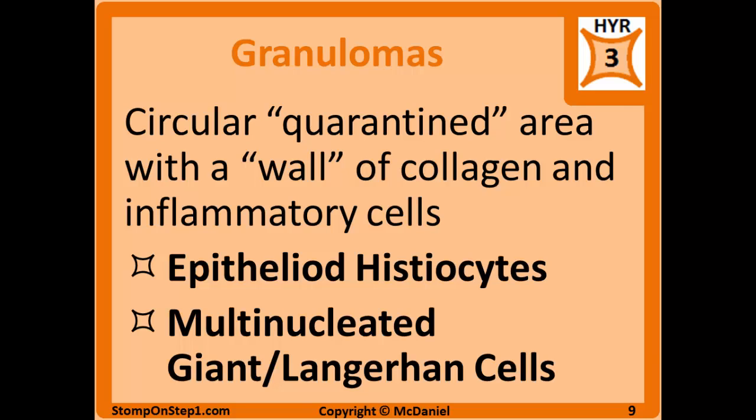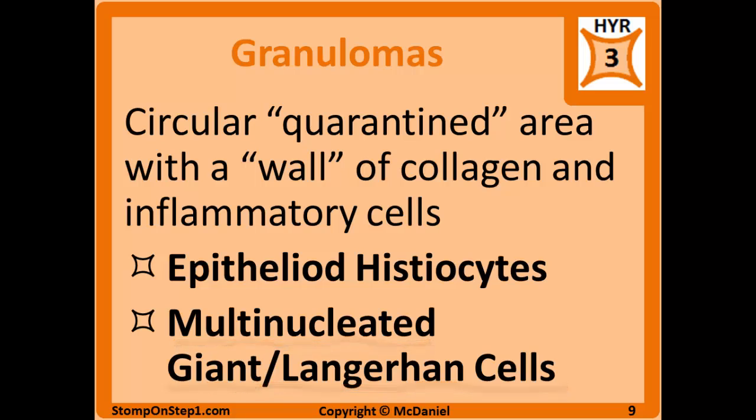This circular walled-off area is called a granuloma. On Step 1, you need to be able to identify a granuloma by a pathology picture or its description in words. The buzzwords for a granuloma are epithelioid histiocytes and multinucleated giant cells, also called Langerhans cells. These are specific types of macrophages that result from exposure to interferon gamma, which is released by CD4 T cells. Multinucleated giant cells are formed by the combination of multiple macrophages, and epithelioid histiocytes are macrophages that change in appearance to almost look like epithelial cells.